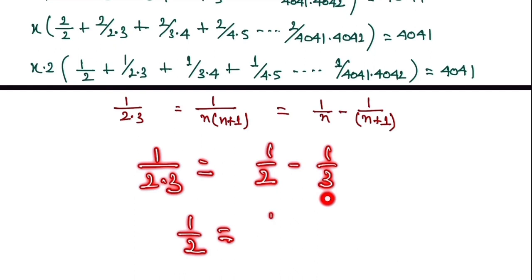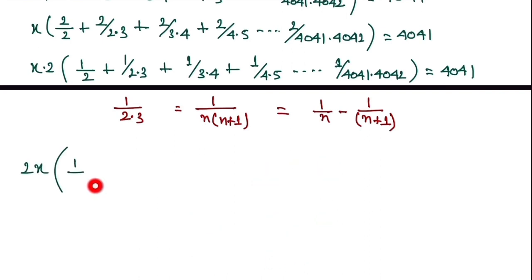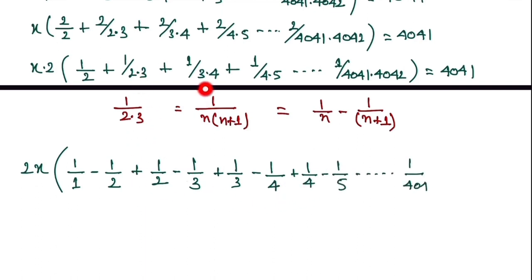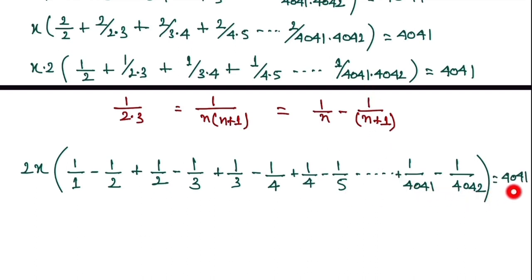So rewriting each term: 1/2 = 1/1 − 1/2; 1/(2·3) = 1/2 − 1/3; 1/(3·4) = 1/3 − 1/4; 1/(4·5) = 1/4 − 1/5; and the last term 1/(4041·4042) = 1/4041 − 1/4042. The full expression equals 4041.